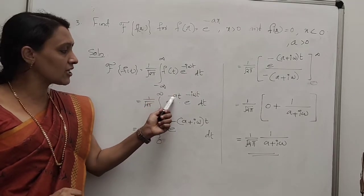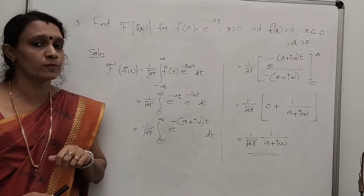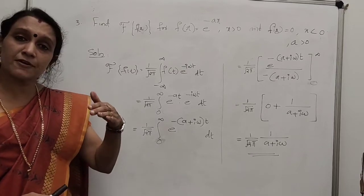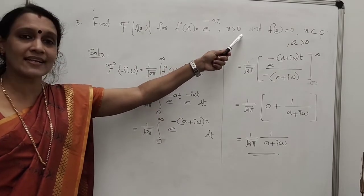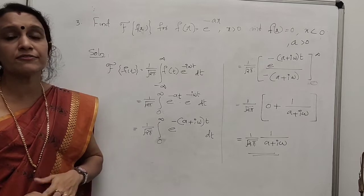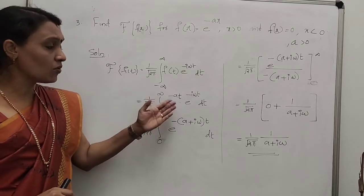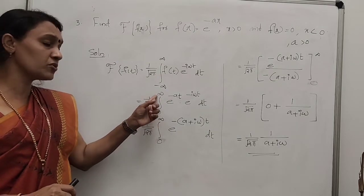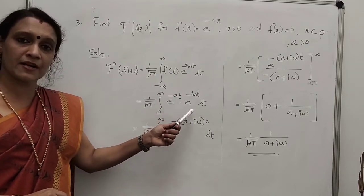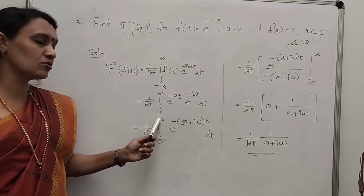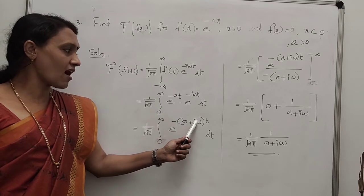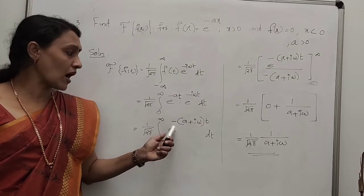Since f(x) = 0 for x < 0, the first integral from minus infinity to 0 vanishes. We are left with only the integral from 0 to infinity of e^(-at) × e^(-iωt) dt = integral of e^(-(a+iω)t) dt.